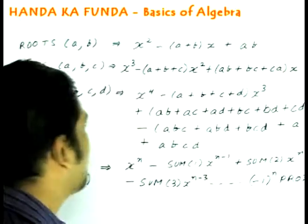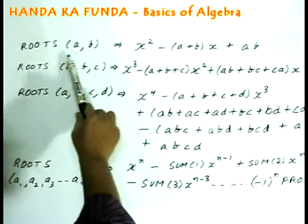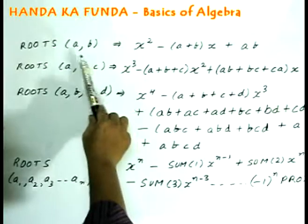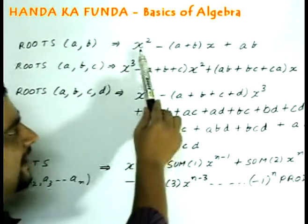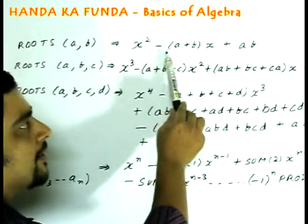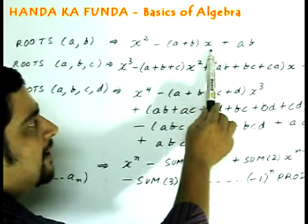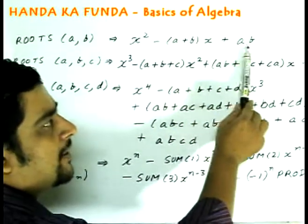Say a polynomial in x or an algebraic equation in x has two roots a and b, then the equation is given by x² minus sum of the roots (a+b) into x plus the constant term would be the product of the roots.